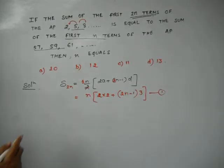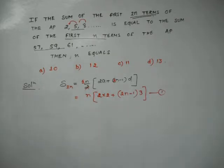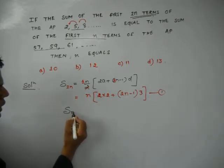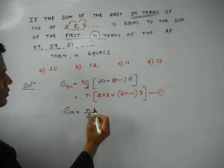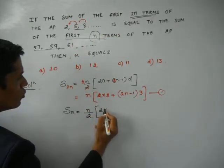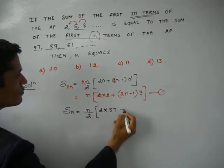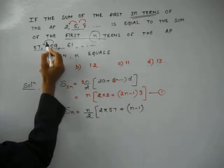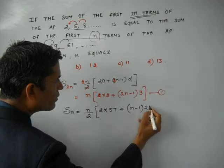Now, for the second AP, the sum of only n terms are there. So, sum of only n terms is, again n by 2. Here, it is just n by 2, not 2n by 2. Because first n terms. 2 into A, first term is 57 here. n minus 1 into d. Common difference is 59 minus 57, which is 2. 61 minus 59, 2. Here, the common difference is 2.